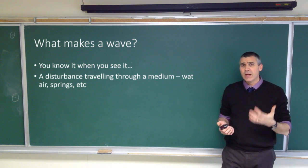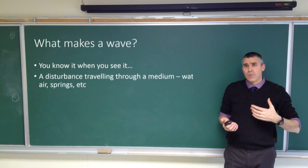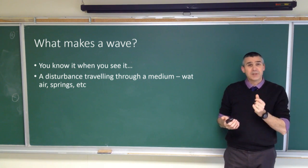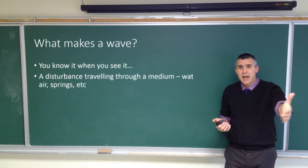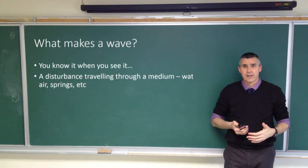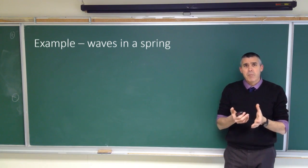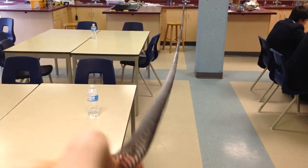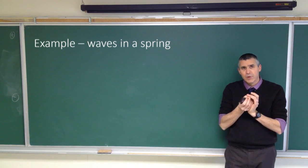So if we look at waves on a spring, the wave is a displacement of that spring as it travels up and down along the length of the spring. So if we displace part of the spring and let it go, when we're displacing it, we're creating tension. We're putting stress on the spring.